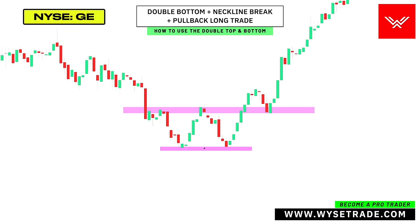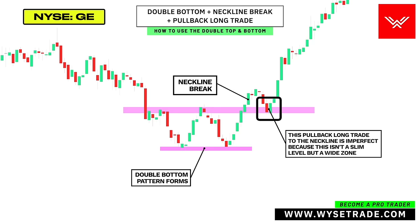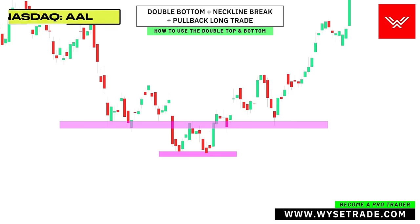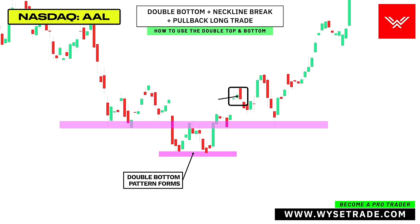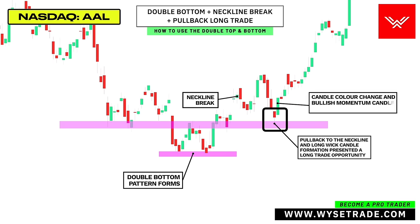This is the GE stock. Double bottom pattern. Neckline break here. This here was your imperfect pullback entry to the wide zone, which presented a long trade opportunity. This is the American Airlines stock. You have your double bottom pattern. Neckline break here. You then had a pullback to the neckline that also formed a long wick candle, a candle color change, and a bullish momentum candle.